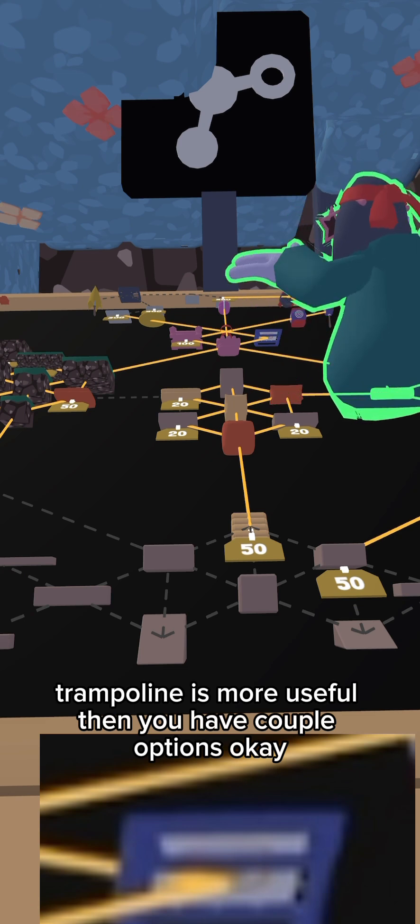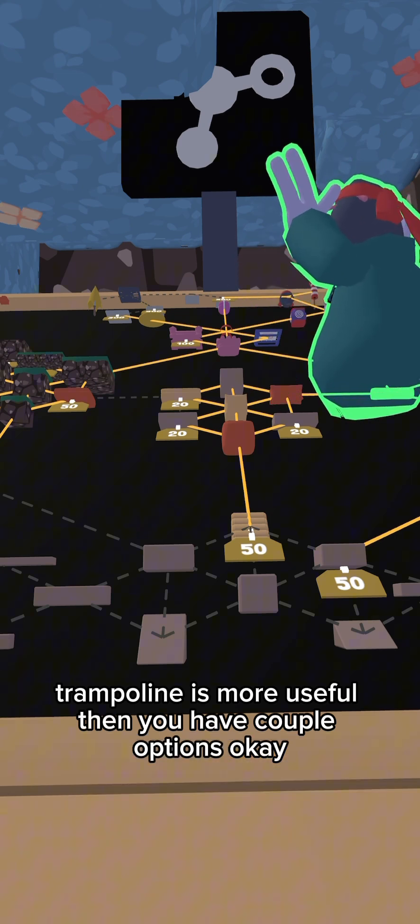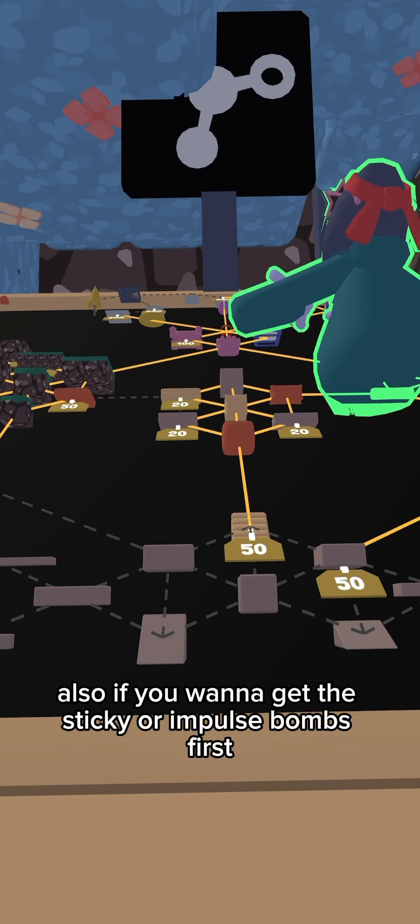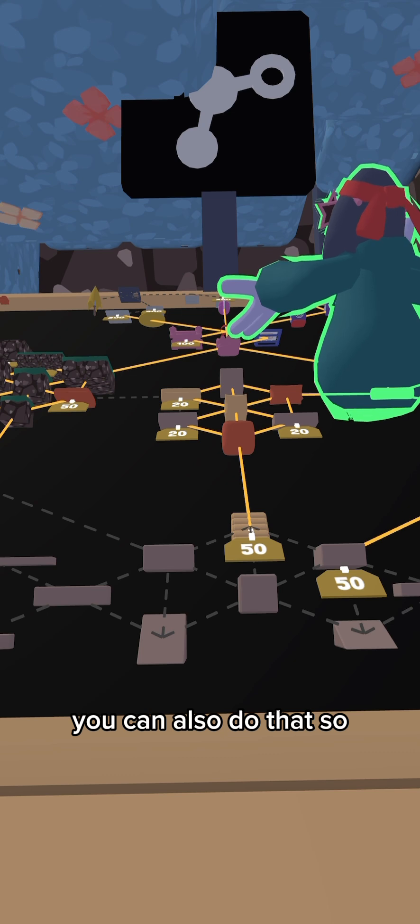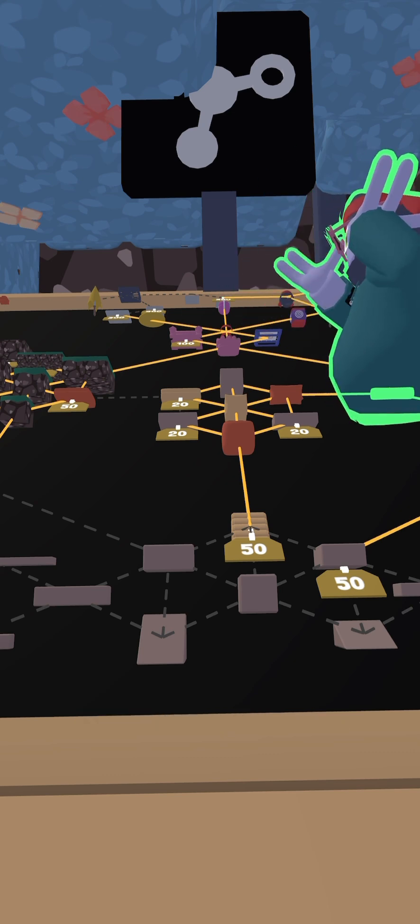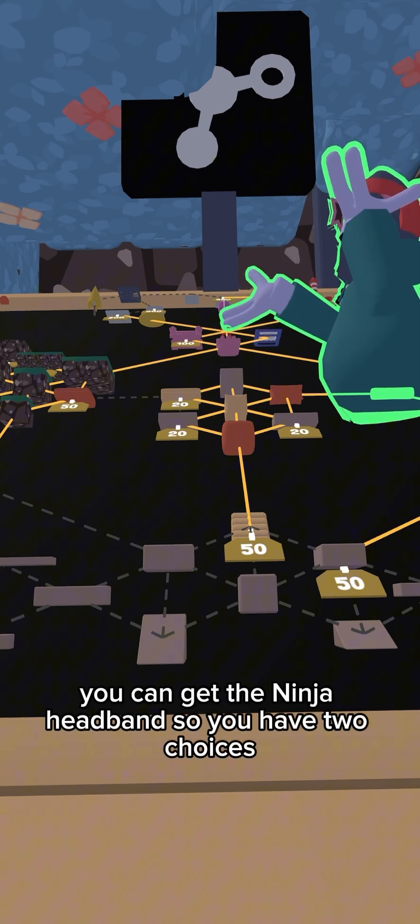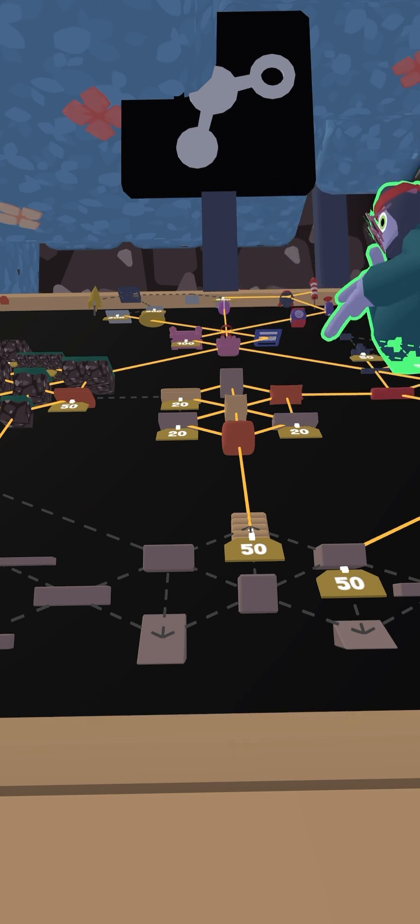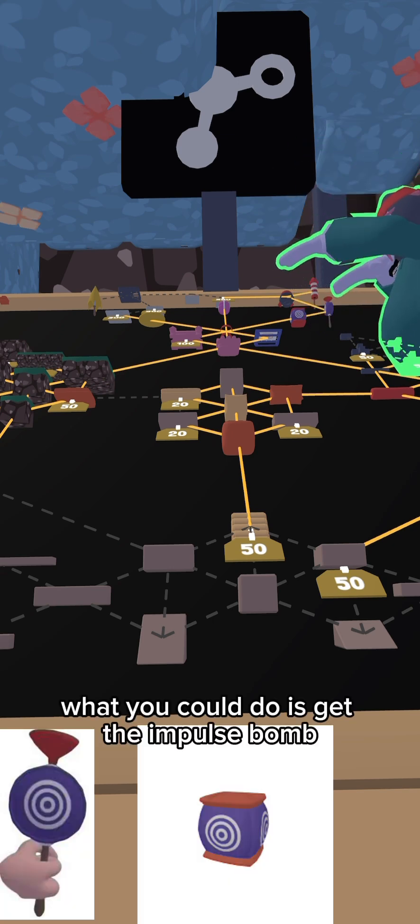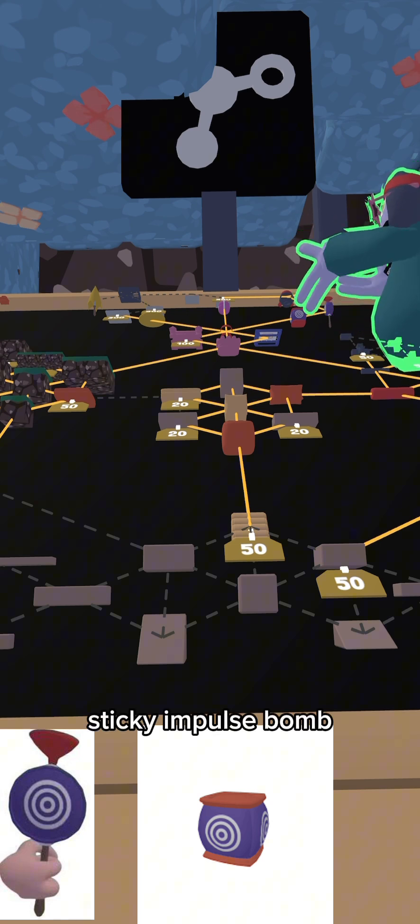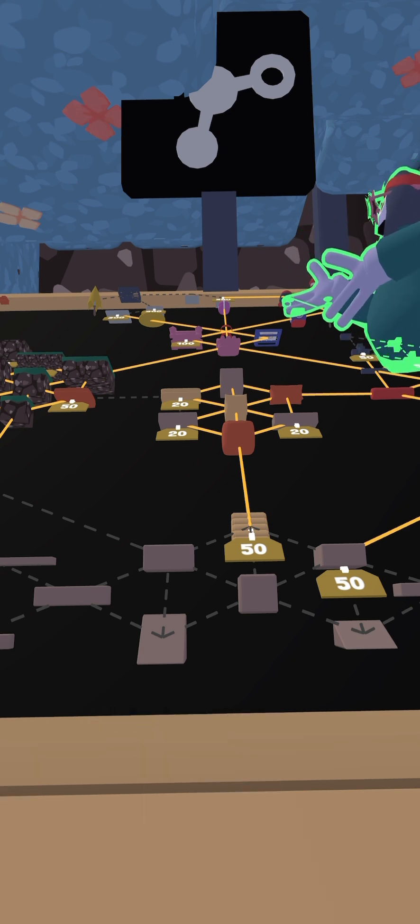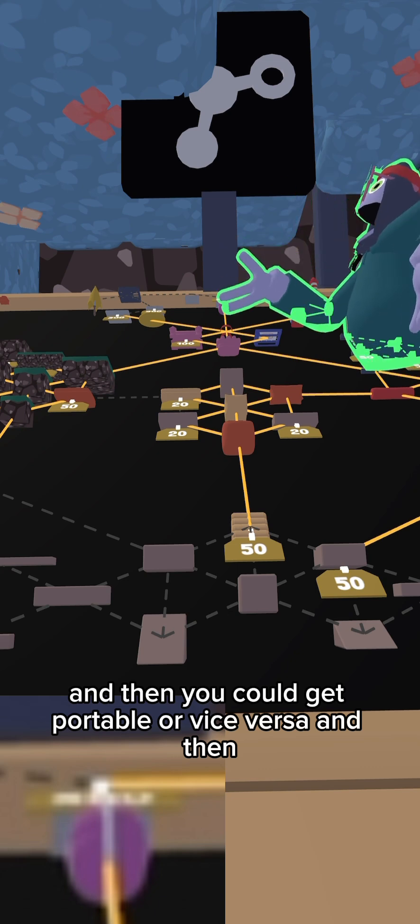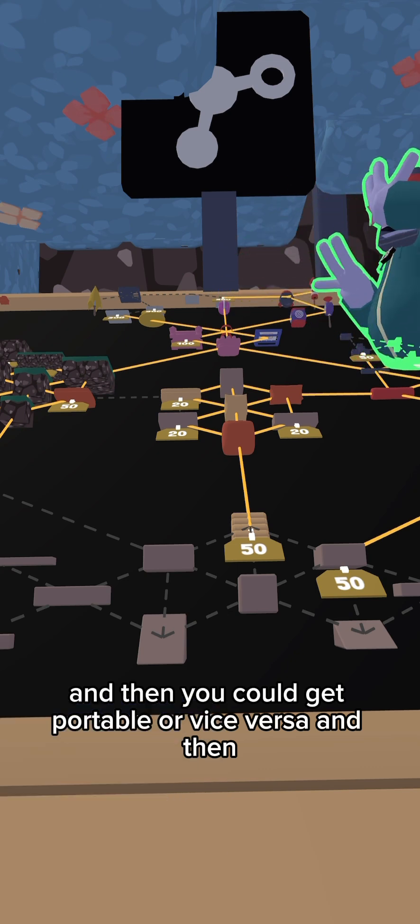Okay, then you have a couple options. Also, if you want to get the sticky or impulse bombs first, you can also do that. So you can get the ninja headband, but you have two choices. What you could do is get the impulse bombs, sticky impulse bomb, and then you could get portable or vice versa.